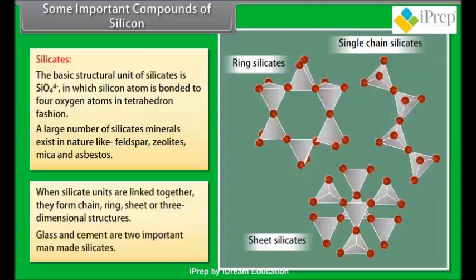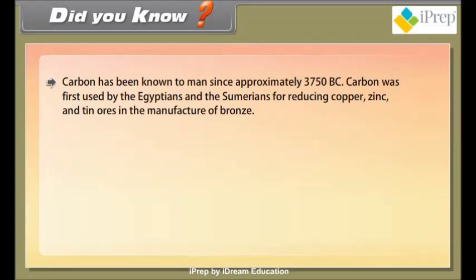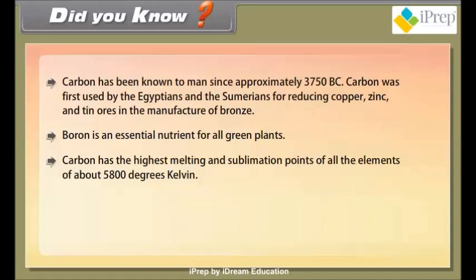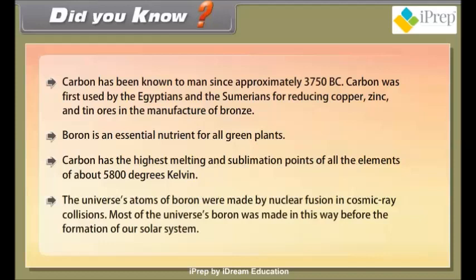Did you know? Carbon has been known to man since approximately 3750 BC. Carbon was first used by the Egyptians and the Sumerians for reducing copper, zinc, and tin ores in the manufacture of bronze. Boron is an essential nutrient for all green plants. Carbon has the highest melting and sublimation points of all the elements of about 5800 degrees Kelvin. The universe's atoms of boron were made by nuclear fusion in cosmic ray collisions. Most of the universe's boron was made in this way before the formation of our solar system.